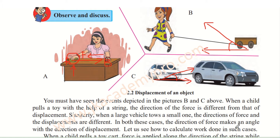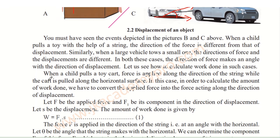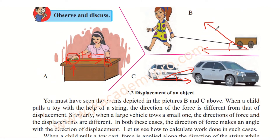Let us see how to calculate the work done in such cases. When a child pulls a toy cart, force is applied along the direction of the string while the cart moves along the horizontal surface. In order to calculate the amount of work done, we have to convert the applied force into the force acting along the direction of displacement. We can only calculate work when we have force and displacement in the same direction. So since here the force is in a different direction, we have to convert it into a force acting in the same direction as the displacement.